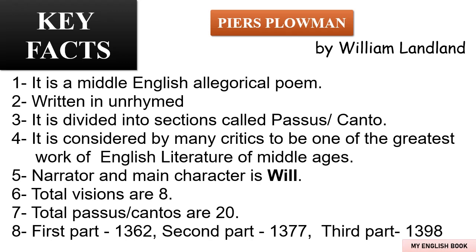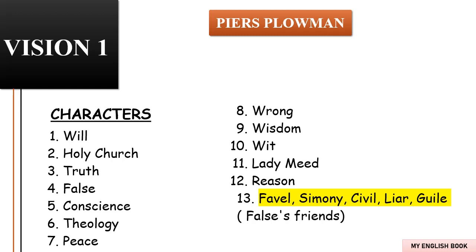Now let's start the summary. When I explain the summary of Piers Plowman, on your screen you will find the characters for each vision. Vision One: Will is the narrator and main character of Piers Plowman. He is wandering the world as a hermit. One day Will falls asleep on Malvern Hills. In his dream, Will meets lots of allegory characters and sees a very high tower — Truth lives at the top of the tower and evil lives at the bottom.